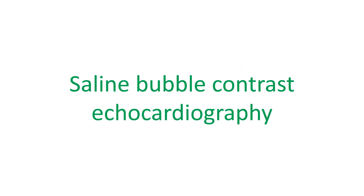We have to look for atrial septal aneurysm in each case of cryptogenic stroke, preferably by transesophageal echocardiogram. Saline bubble contrast echocardiography should be used to check right-to-left shunt across a patent foramen ovale.